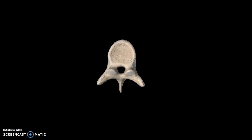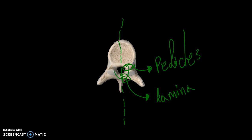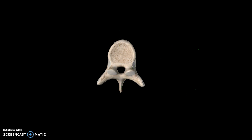Now we can move to the vertebral arch, which is this structure here. It's made up of two different parts. Looking at one half of the structure, the top one is known as the pedicles and the lower one is known as the laminae.